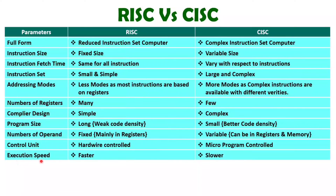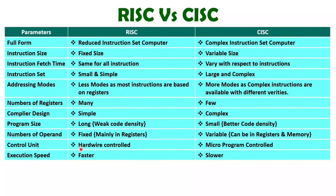When you talk about execution speed, then obviously RISC architecture is having faster execution speed. The reason is you are having less number of instructions, chip area is covered with the execution unit and many registers, and you don't need a too complex circuit for instruction decode as the instruction set is small and simple. So execution speed will be very fast with RISC. But with CISC architecture, execution speed will be slow, because the control unit will be very costly with hardware control, so we should go for a micro-program control unit and that will take a bit more time to execute instructions.